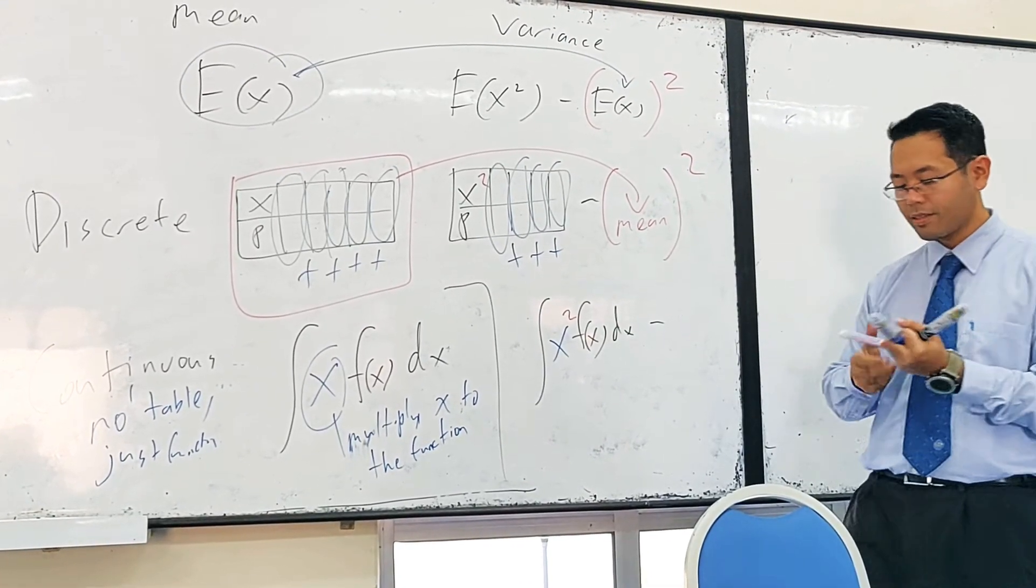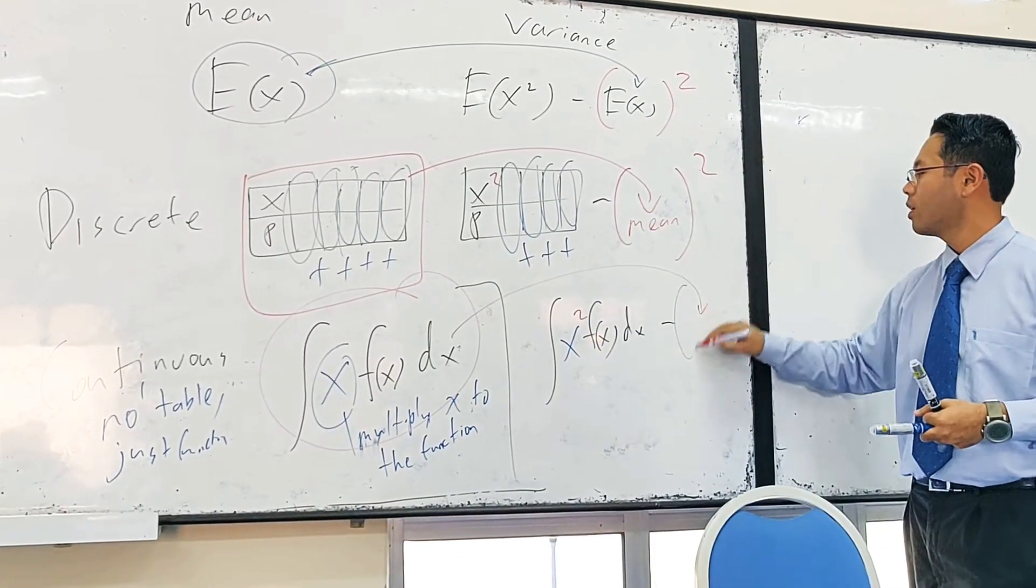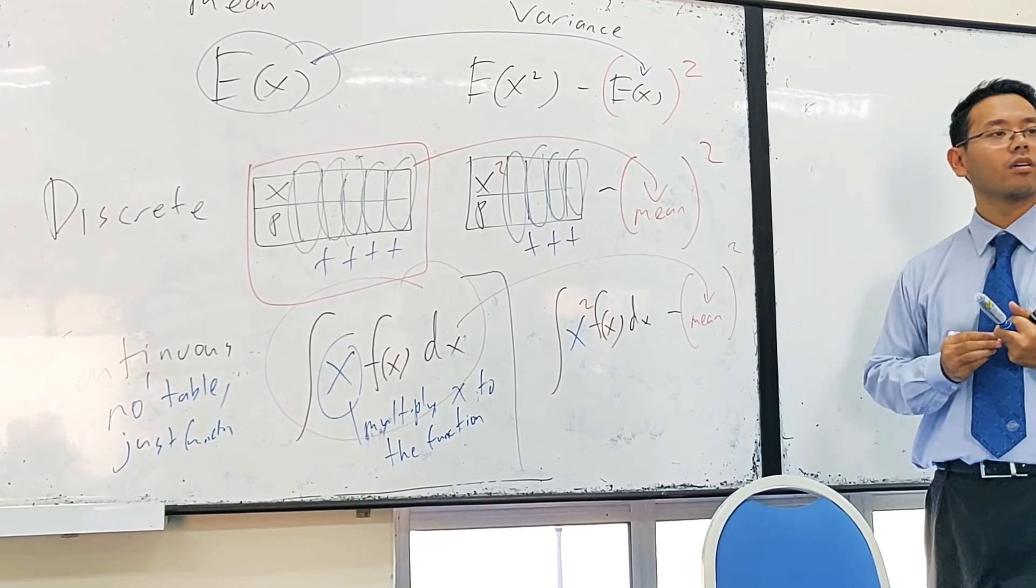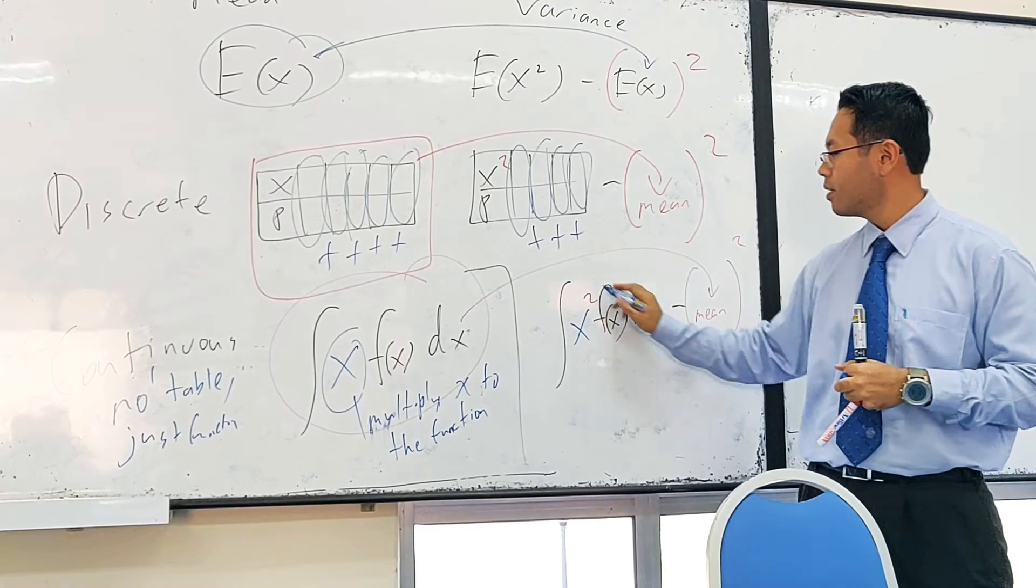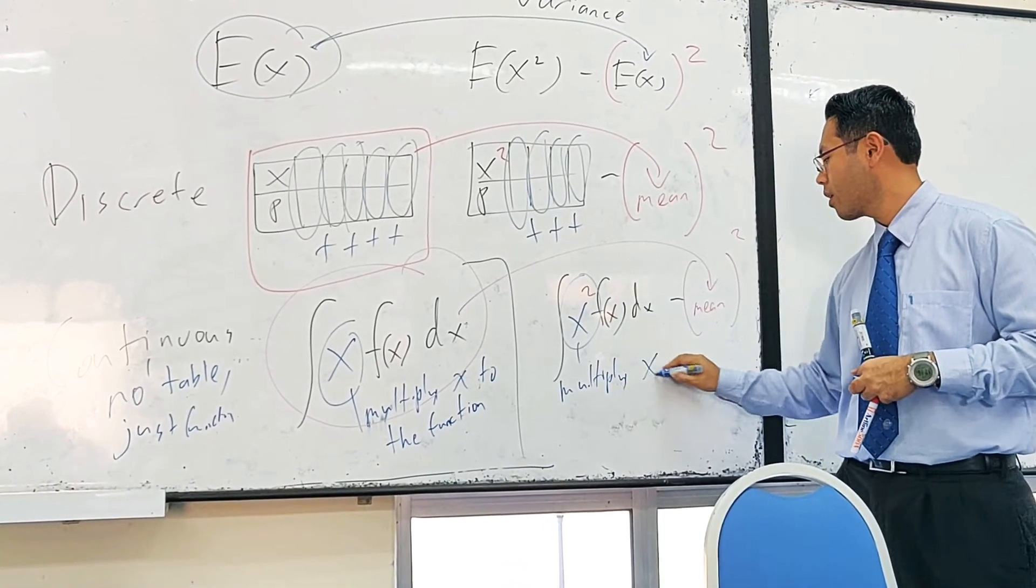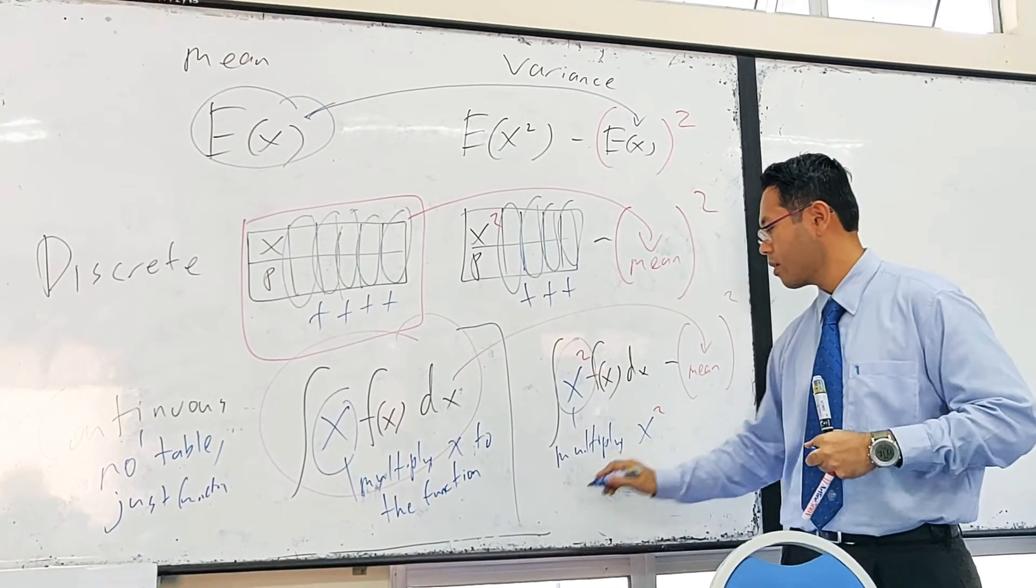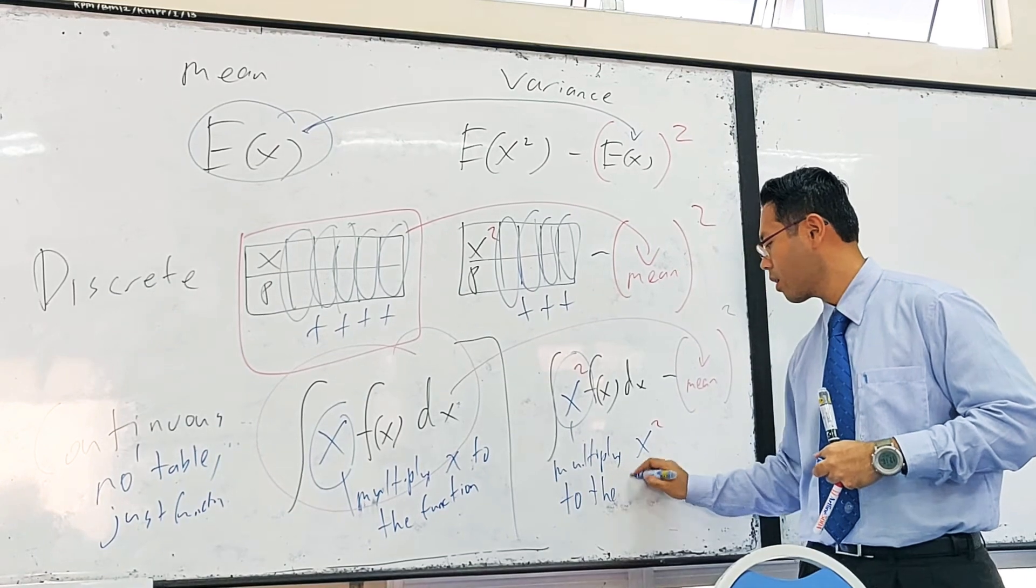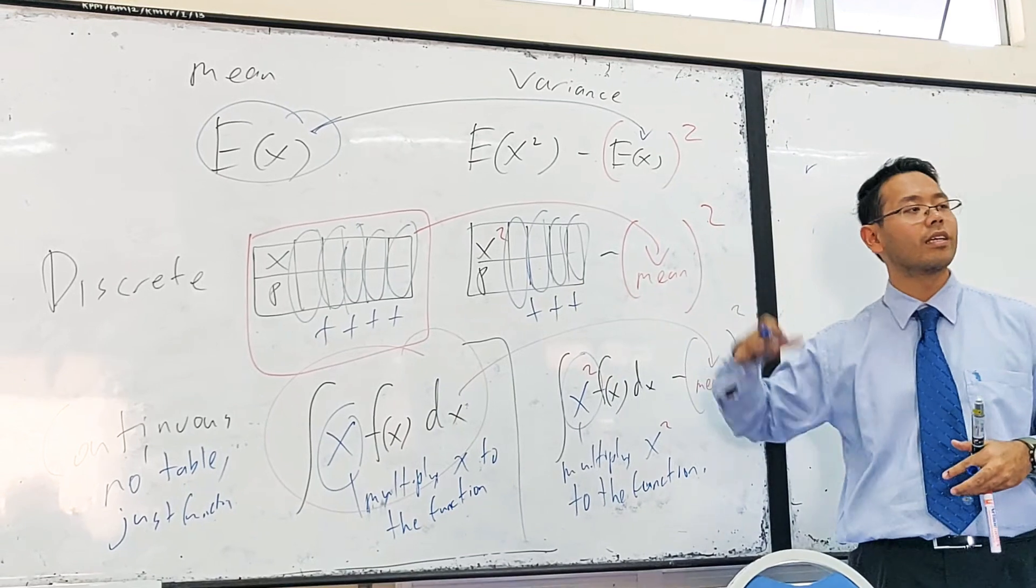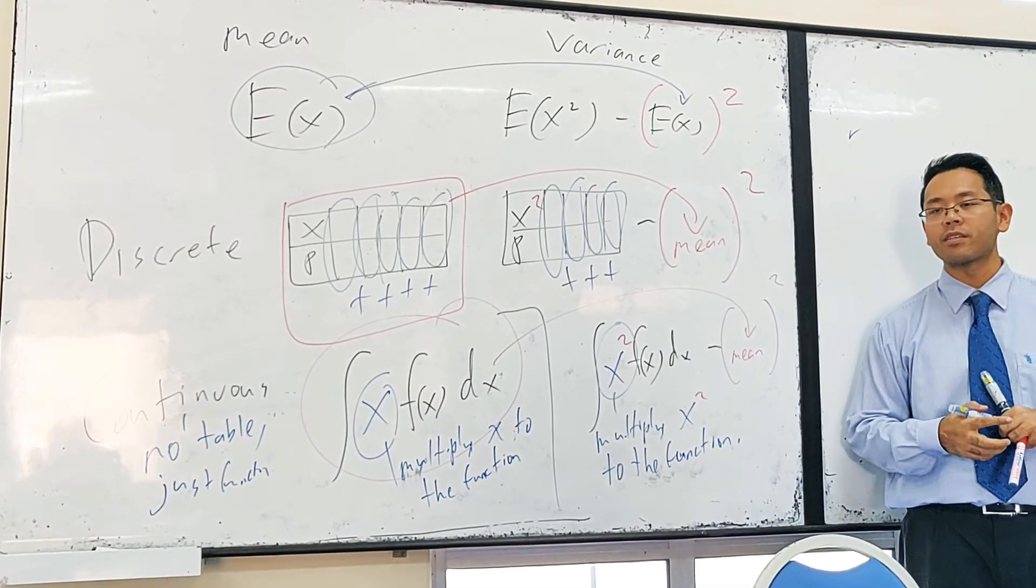And what about this part? It goes the same thing. We take this mean and we square the mean. Right, in this case. Okay, so that's theoretically the formula, the pattern. So let's try some examples.